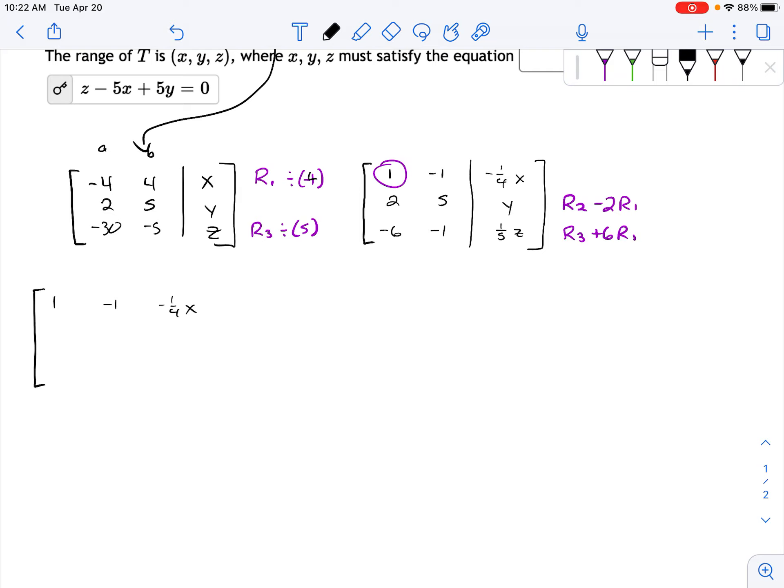Row two minus twice row one, so it's two minus two, then five plus two. Then let's see, row two has a y minus twice row one, so that's going to be minus two times negative one-fourth x. So it's going to be plus one-half x.